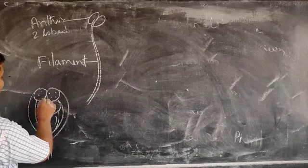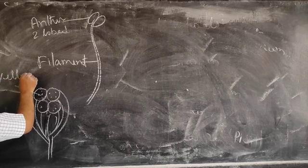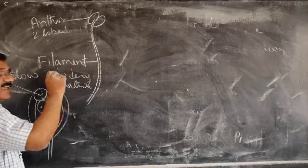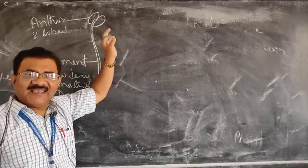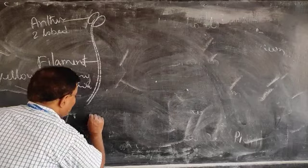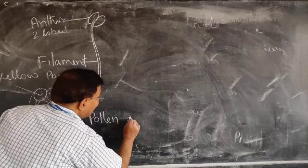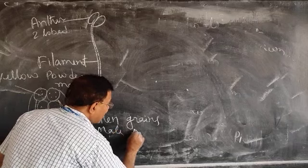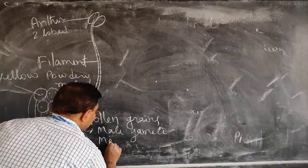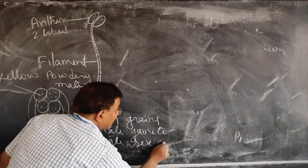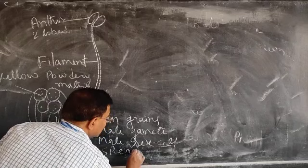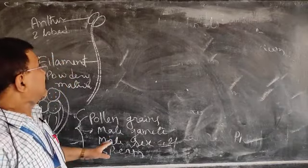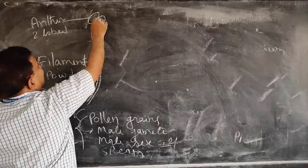In the anther, yellow powdery materials are kept. Do you know what these yellow powdery materials are? Yes — they are the pollen grains. Pollen grains are the male gamete, or male sex cell, or sperm. So the male gamete is present in the anther.